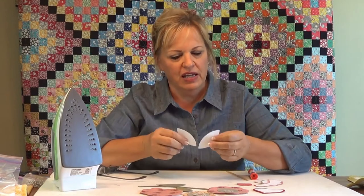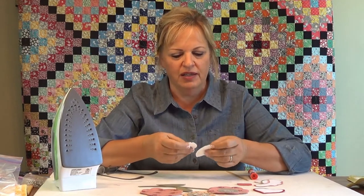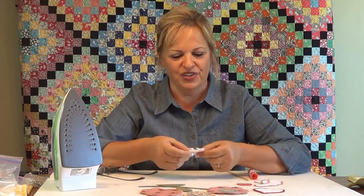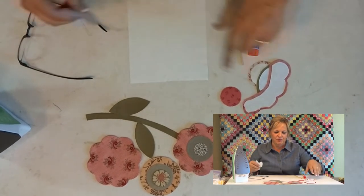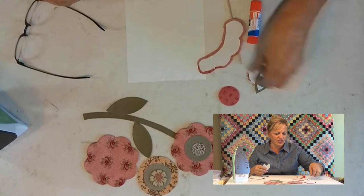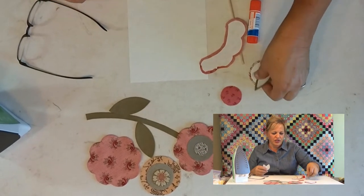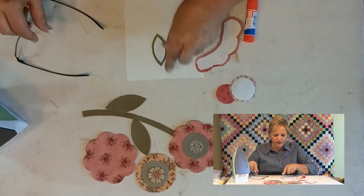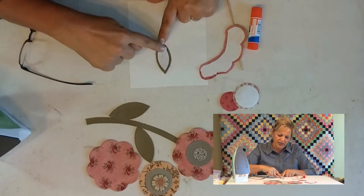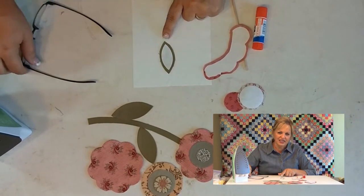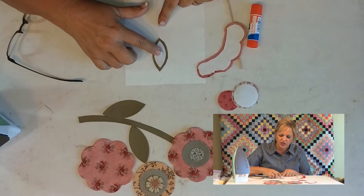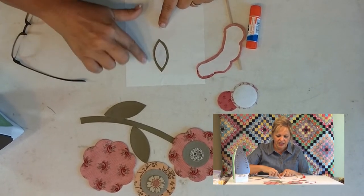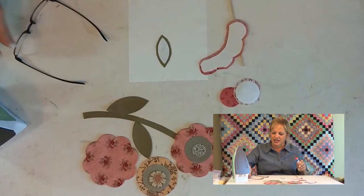What we're going to use in this applique technique instead of freezer paper to cut out our shapes, we use a water soluble stabilizer and we'll talk about that next time in class. But when we create our shape it's going to look just like the freezer paper technique where we cut out our shape out of the paper. In this case it's the stabilizer and we're going to iron it on to our background fabric and then cut out our scant quarter inch seam allowance around the outside.